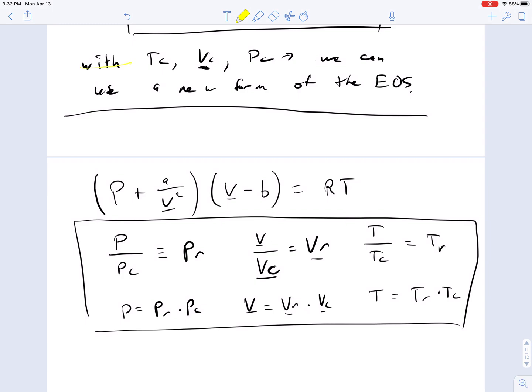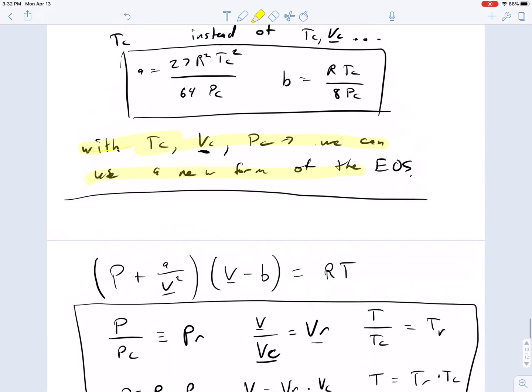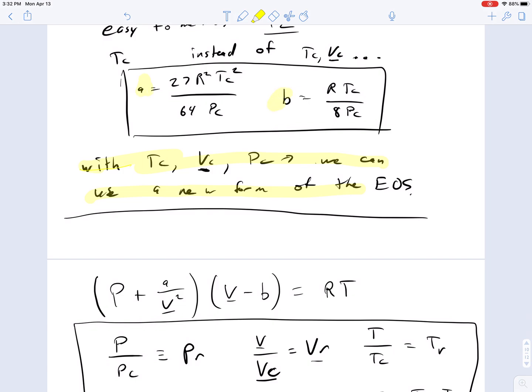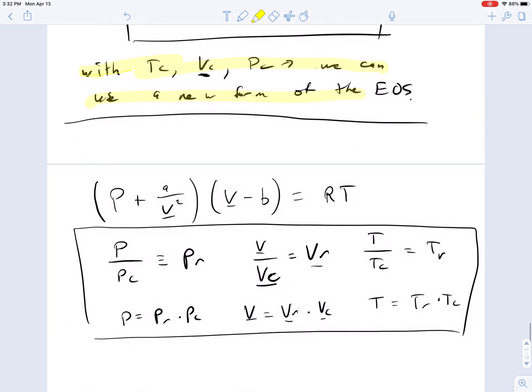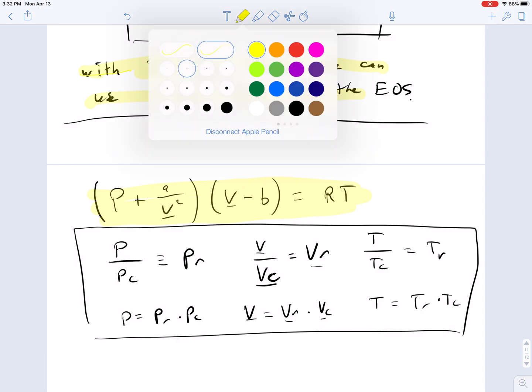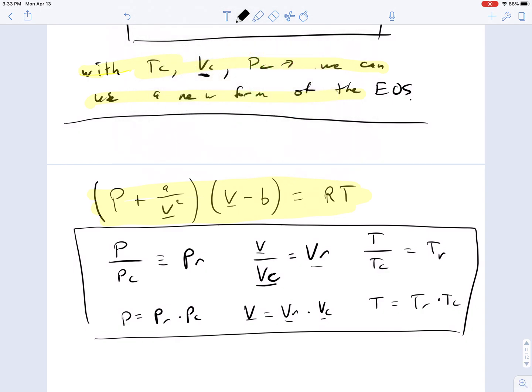So last time we finished with this right here, this TC VC PC that gives us relationships for A and B that we use in the van der Waals equation of state. I've rewritten the van der Waals equation of state right here where I'm highlighting, and the parameters A and B are right here.